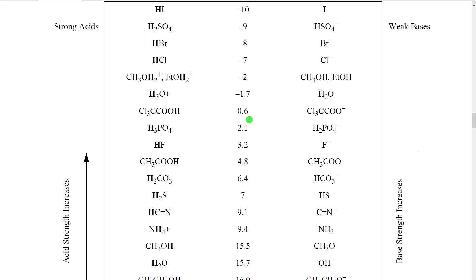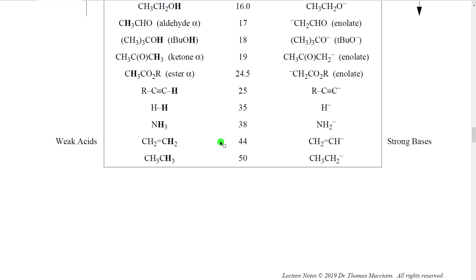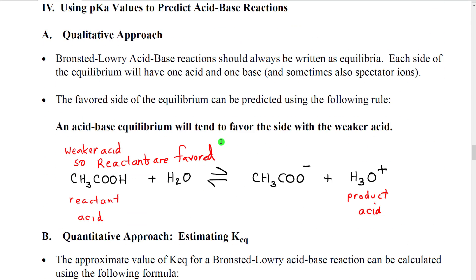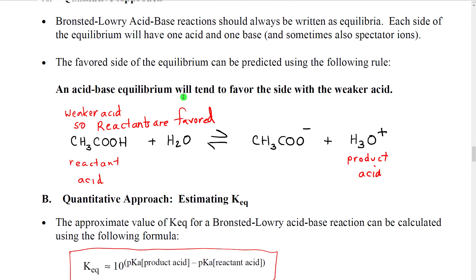Well, minus 1.7 is more negative than 4.8. It's higher up in this column, so hydronium is the stronger acid. Why is that important? Well, it turns out acid-base equilibrium favor the side with the weaker acid. So, since this is the stronger acid on the product side, the reactants would be favored.